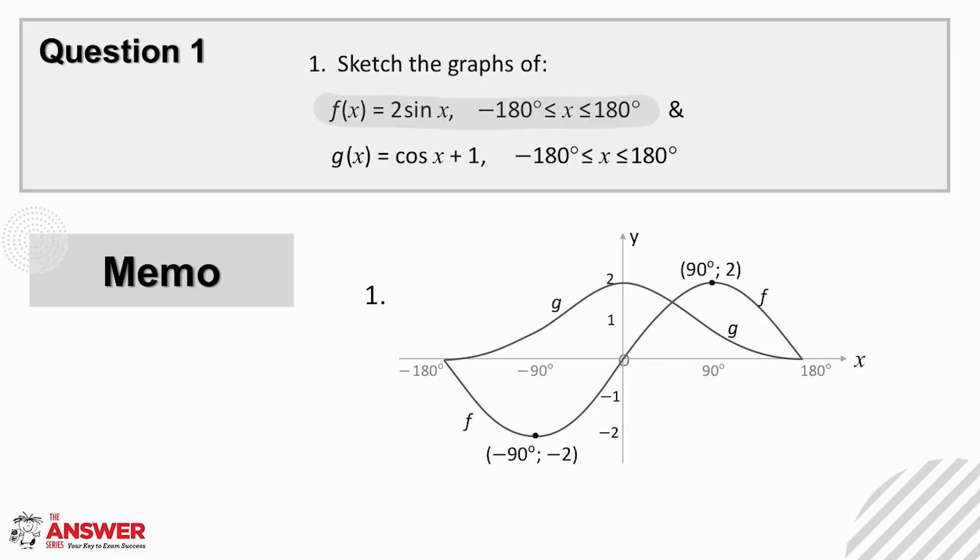Let's consider f first. Here is a rough sketch of the basic sine graph, y equals sin x. The two aspects we need to consider are the interval required for our final sketch and the changes necessary according to the equation of f. So this indicates the part of the graph we need to sketch, and the amplitude of f is 2, so we must stretch f 2 units from its midline. This is then f.